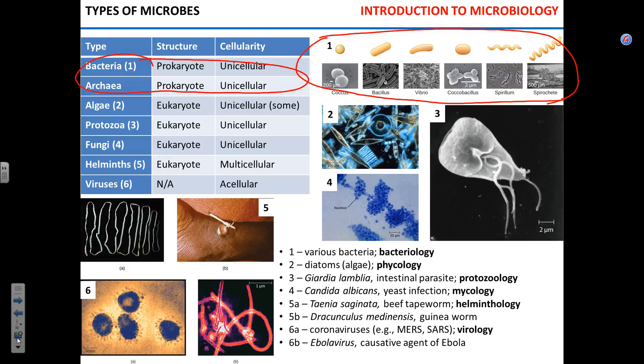Algae - you see diatom algae here - they are eukaryotes. The algae we're going to talk about briefly are unicellular. Have you ever seen algal blooms in lakes, when a lake starts to become green? That's unicellular algae. On the other hand, when you're swimming and there's a cold slimy thing that touches your leg - that's multicellular algae that grows from the bottom of the pond.